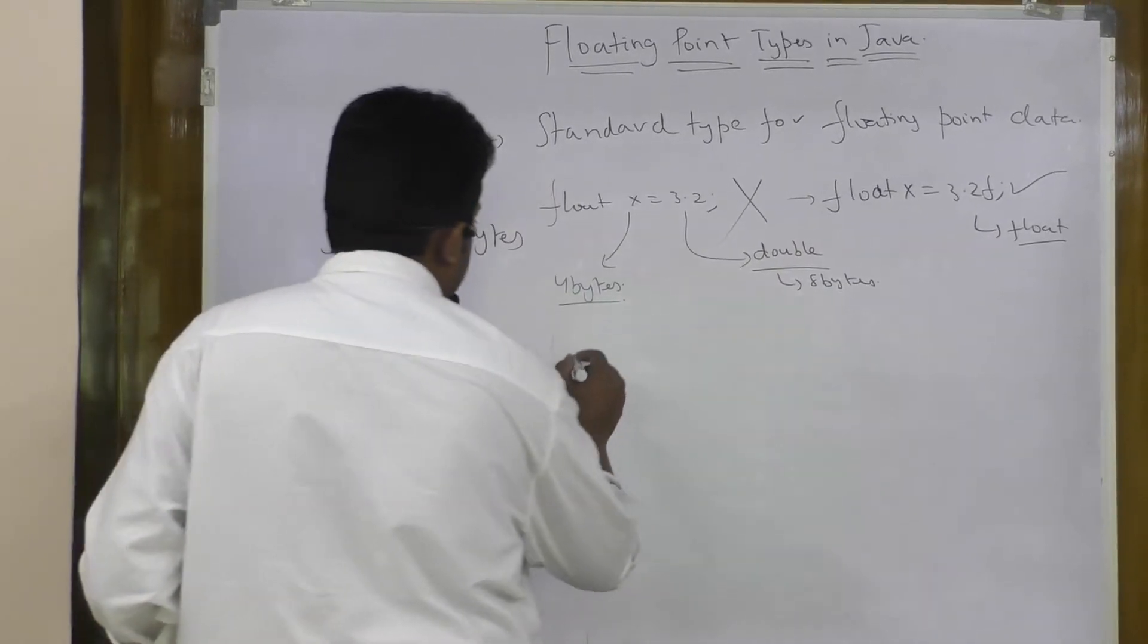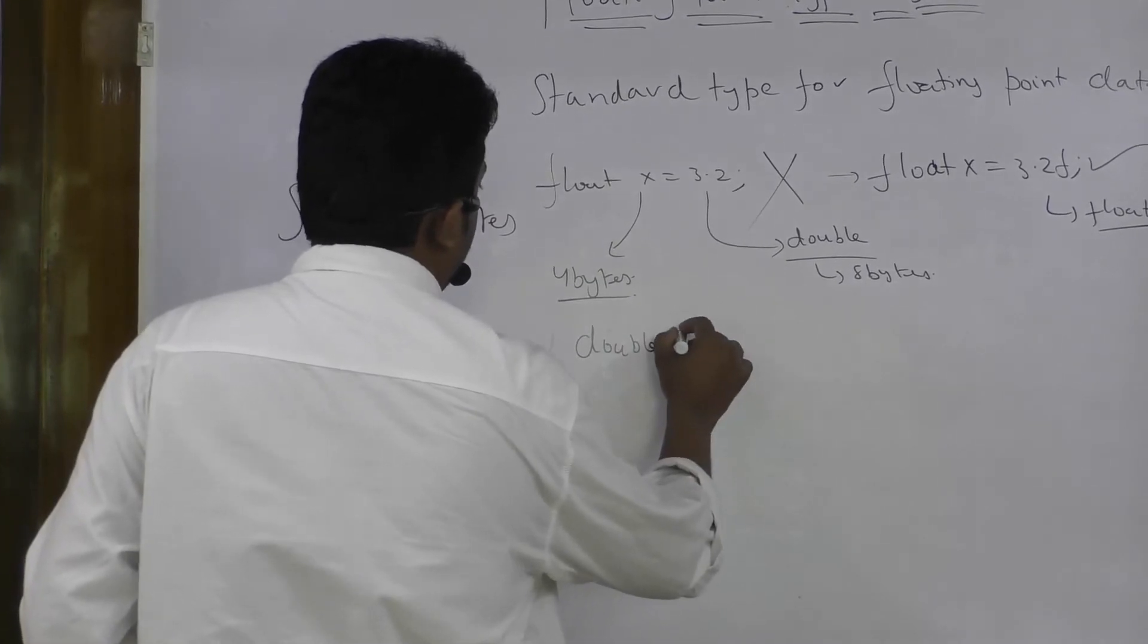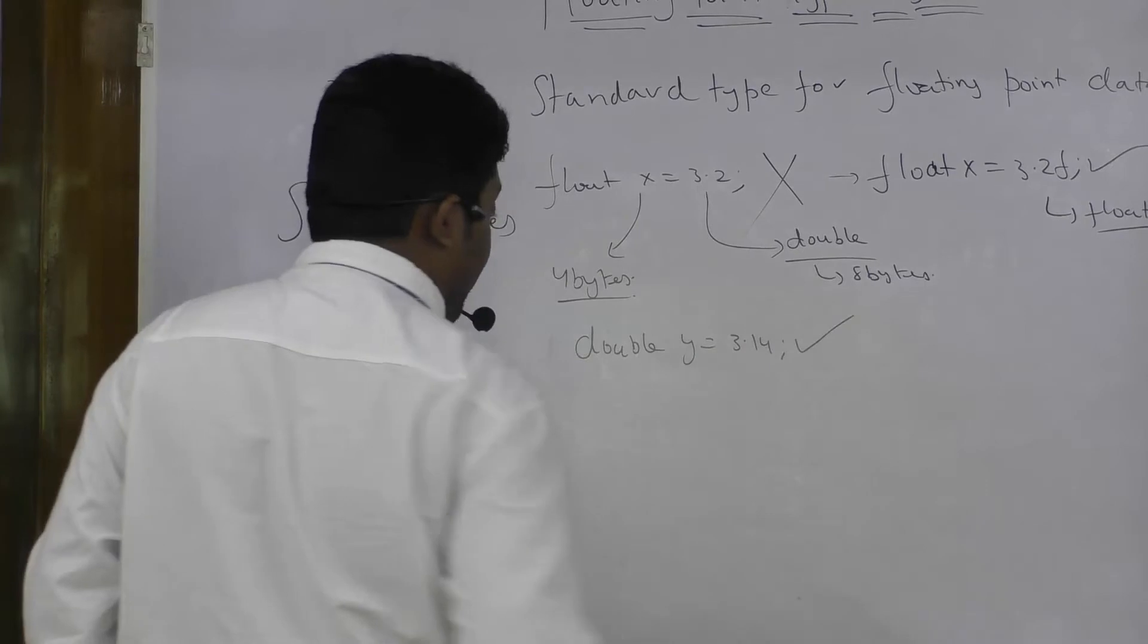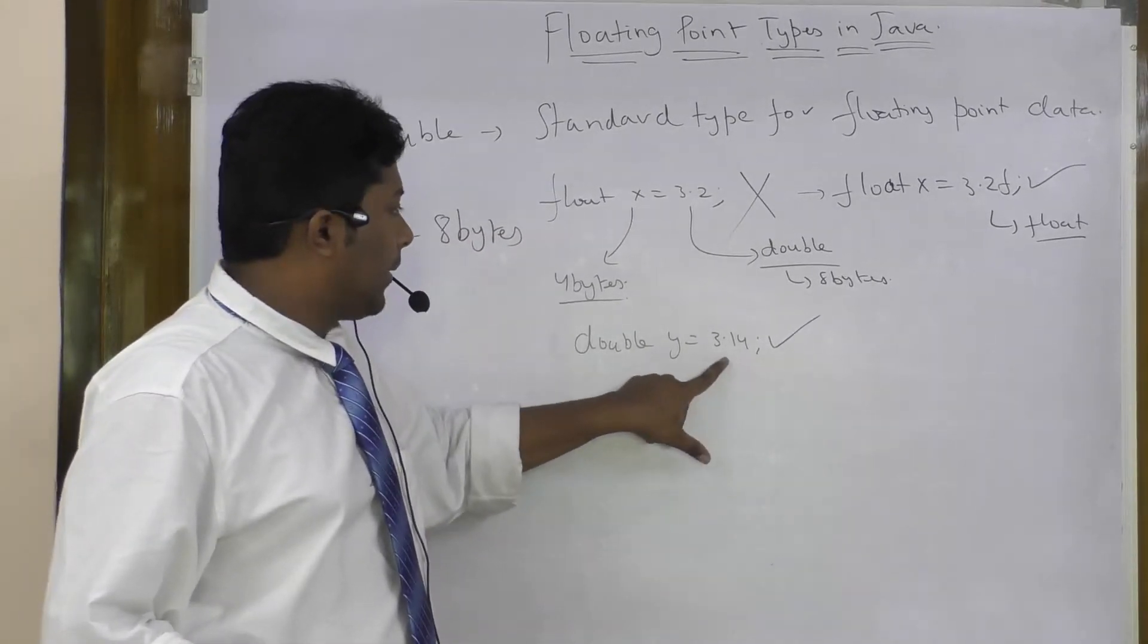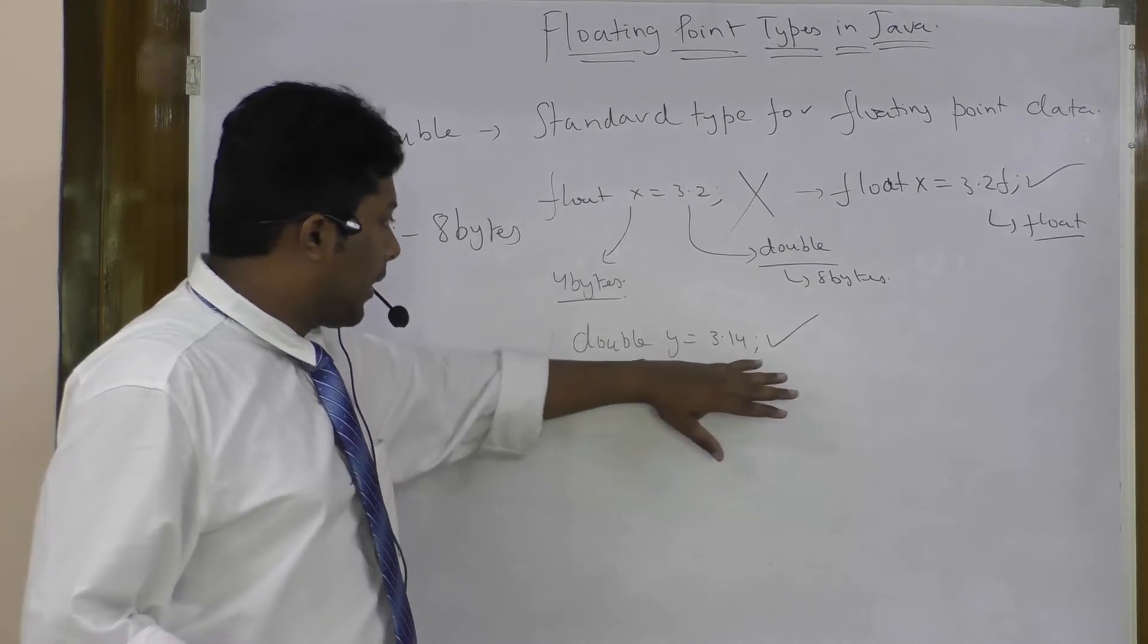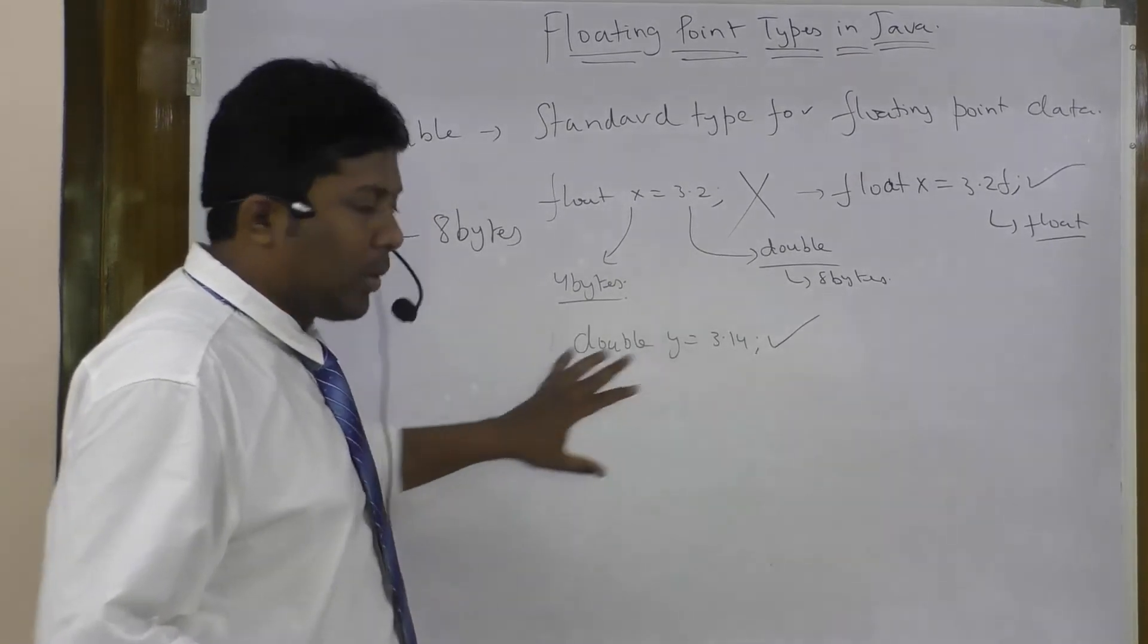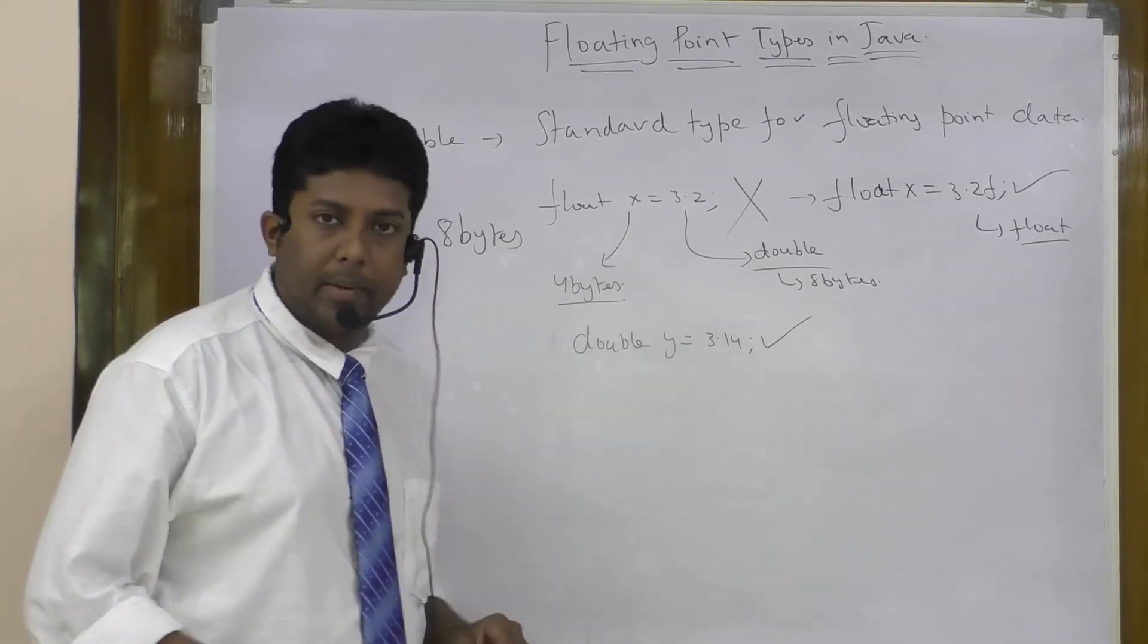That is not the case if you are using a double. If you say double y is equal to some 3.14 or something like this, this is perfectly valid 100%. Because by default, as we said, all floating point data in Java are of type double. And here we have declared y as double, and there is no problem in the type conversion. And this works 100% fine.